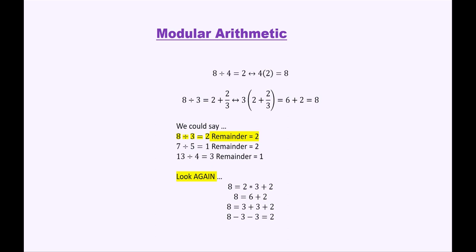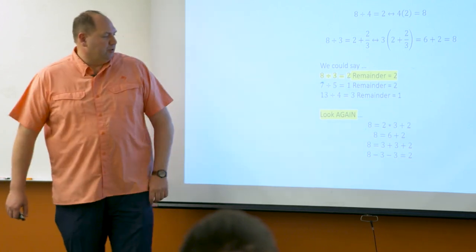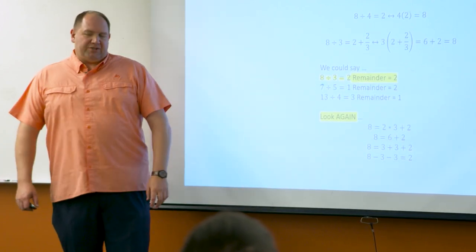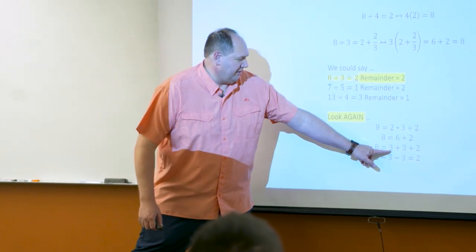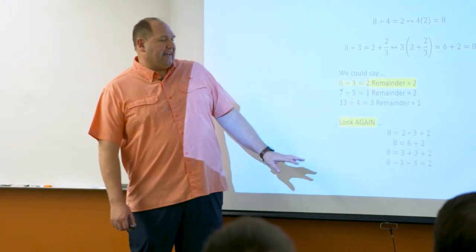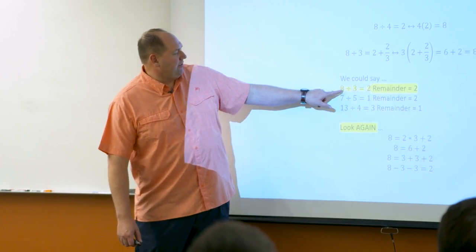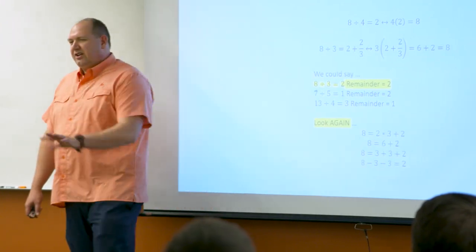If I think about it the same way but with a little different language: for 8 divided by 3 equals 2, remainder 2, remember I multiplied 2 times 3 and added the 2. Really, 2 times 3 is 3 copied twice — so 3 plus 3, plus 2 equals 8. If I sort of solve for 2 by subtracting 3 twice from the left side, I get 8 minus 3 minus 3 equals 2. So effectively, 8 divided by 3 equals 2, remainder 2, because I'm subtracting 2 copies of 3 from 8, and when I'm done, I get 2.